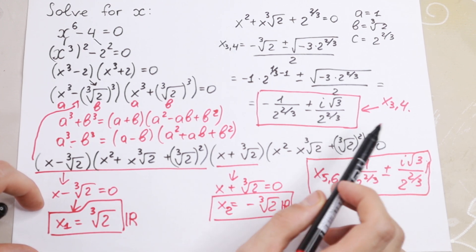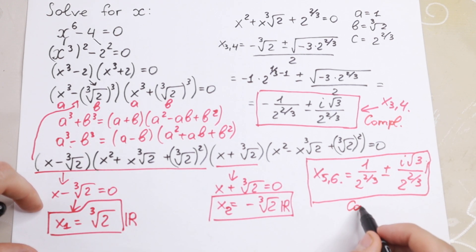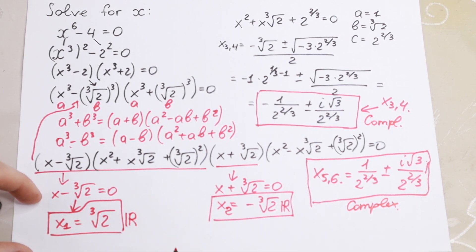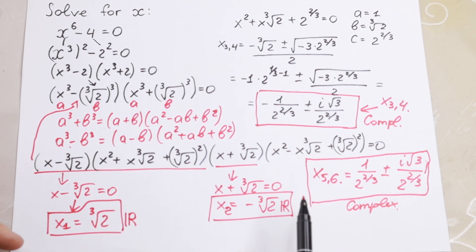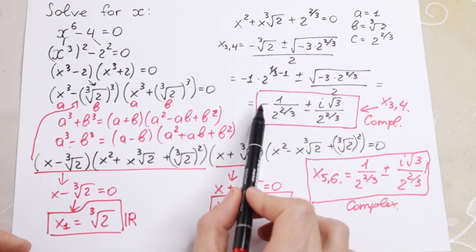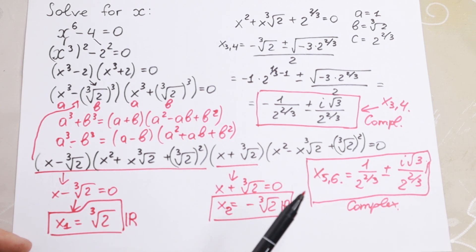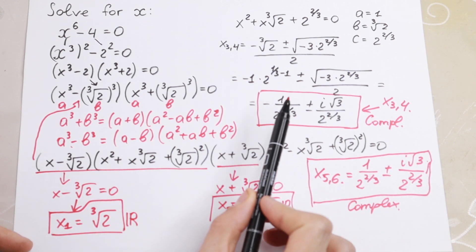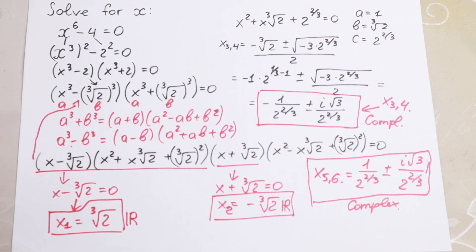So we find all roots. x1 equals cube root of 2 and x2 equals minus cube root of 2, both in real numbers. We have four complex roots: x3 and x4 with the negative real part, and x5 and x6 with the positive real part, each with plus or minus the imaginary component. This is the solution.